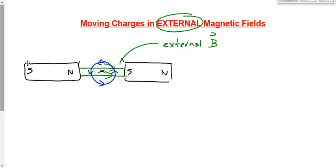Just as the two magnetic fields from two bar magnets interact with each other, they're going to produce a force. We have to use a rule called the hand rule for deflection to figure out what this force looks like. You're going to take your left hand, because it's a negative particle — if it was positive, you'd use your right hand. Make your fingers and your thumb perpendicular to each other, but don't bend your fingers this time. Leave them straight.